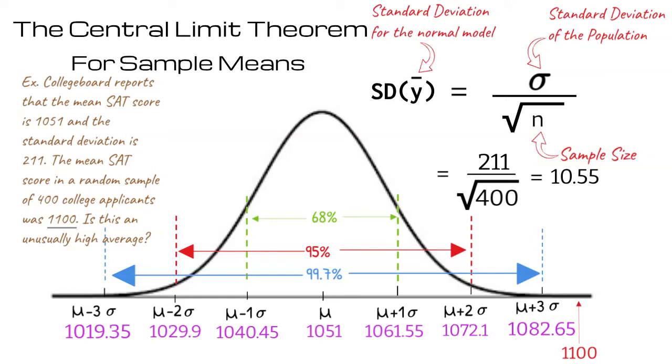Before wrapping up, let's make sure the difference between using the normal model for the distribution of data within a single sample and the normal model for the distribution of means for multiple samples is clear. In a normal model for the distribution of data for a single sample, we are looking at individual SAT scores that can range from very low to very high. On the other hand, with what we've done in this video, the normal model for the sample mean uses the means of large random samples yielding a much smaller spread.